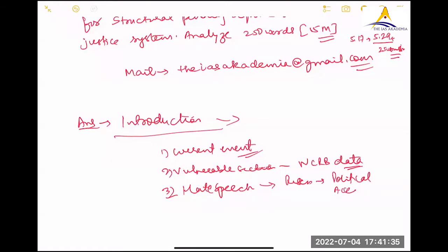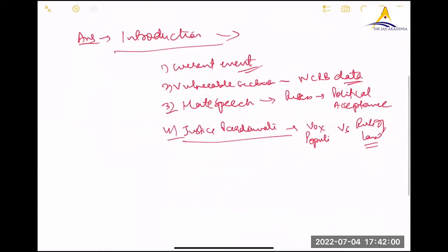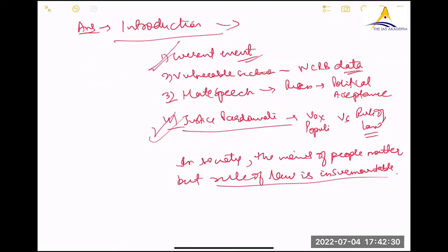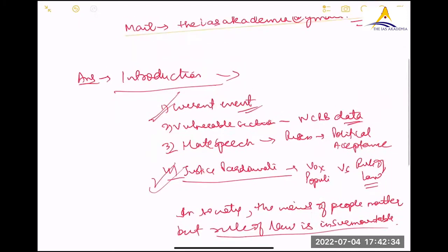that has also risen and become a part of popular political acceptance it has got. Or you can mention recently yesterday only justice Pardhawala or Pardhawala. I don't know his name correctly. He was giving a speech, Vox Populi or People's Opinion, Popular Opinion versus Rule of Law. He says in society, people matter, but rule of law is insurmountable. In society, the views of people matter. But rule of law is insurmountable. There cannot be rule of men, rule of law, rule of law is above everything else. So I would suggest go with this one or you can go with the current event. Do not explain it. It is showing hate. The question has already said that hate crime is increasing.